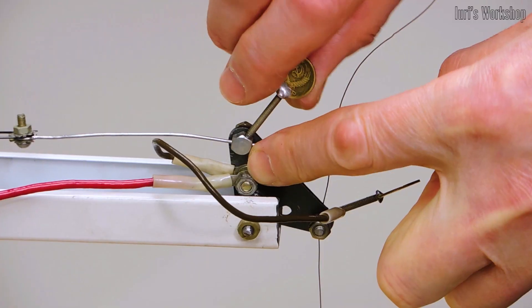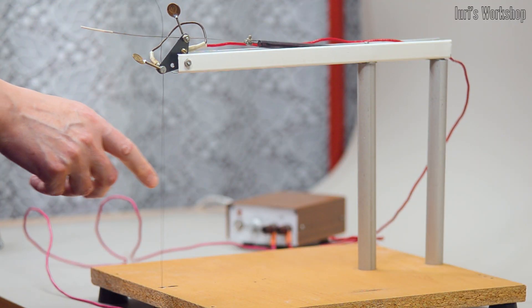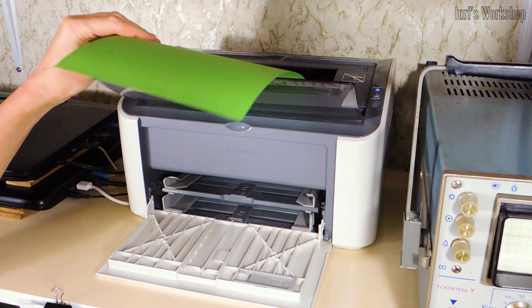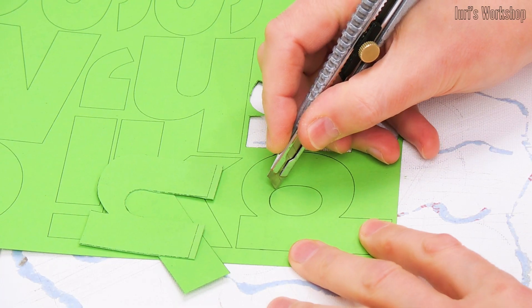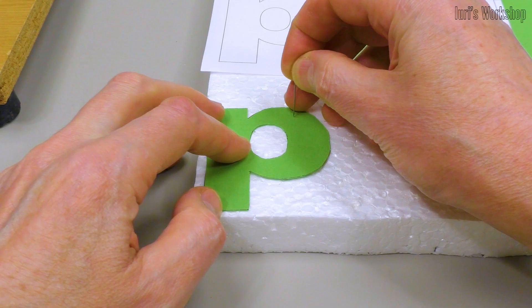Coins soldered to the screw heads allow you not to use a screwdriver. To demonstrate the work of the machine, I will show how you can use it to make a volumetric logo from styrofoam. There seems to be nothing special to explain.